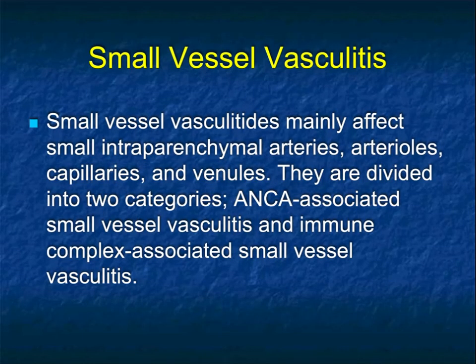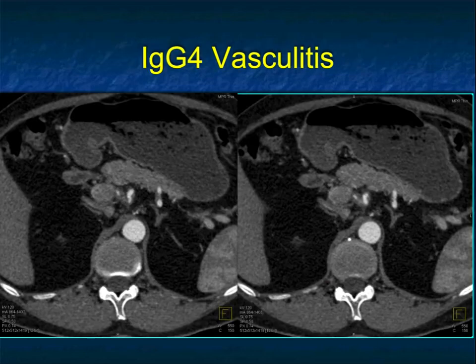Now, we've spoken about large and medium vessel disease, and that means we need to speak about small vessel vasculitis. These are divided into two big categories: ANCA-associated small vessel vasculitis and immune complex-associated small vessel vasculitis.